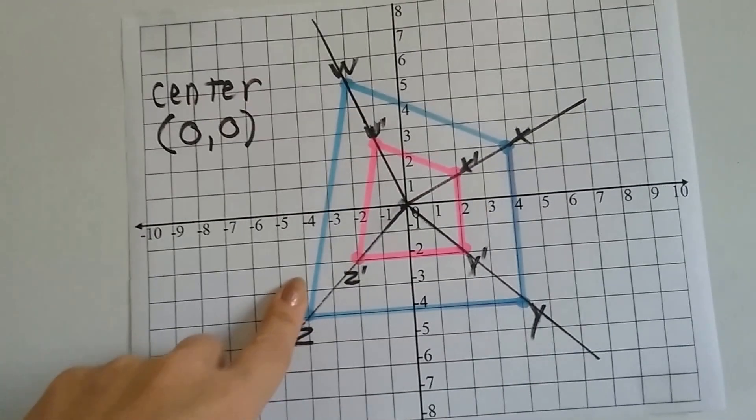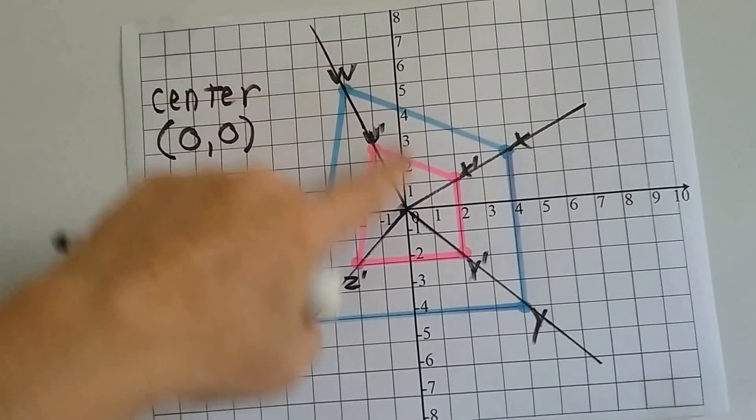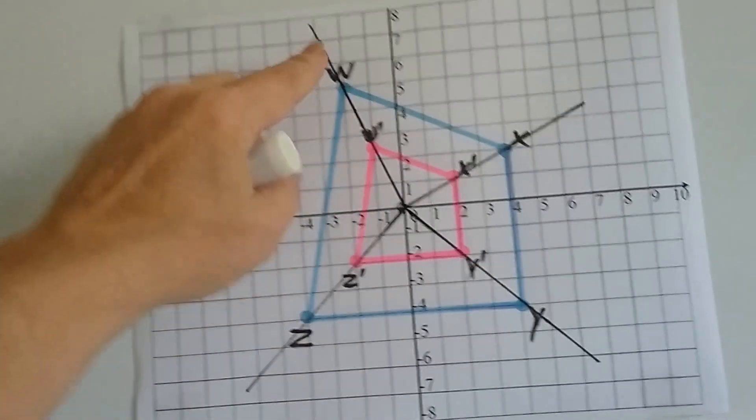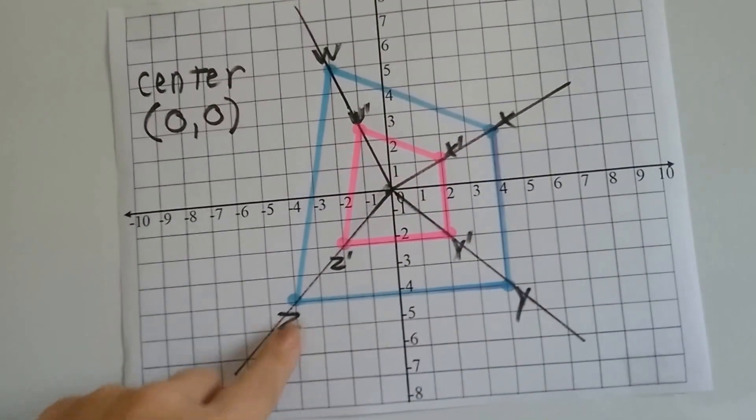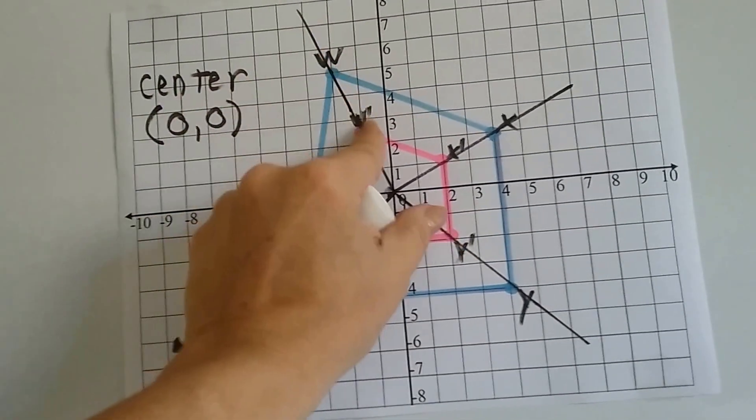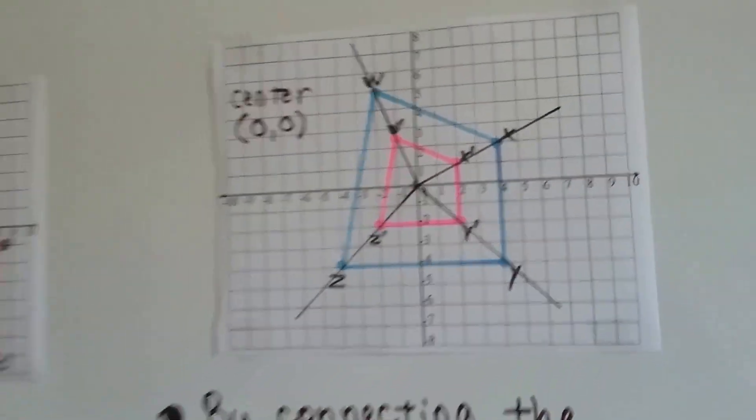This is the image because it's got the little tick marks. When we connect w to w prime and x to x prime and y to y prime and z to z prime, where do the lines meet? They meet at 0, 0. So that's the center of dilation.